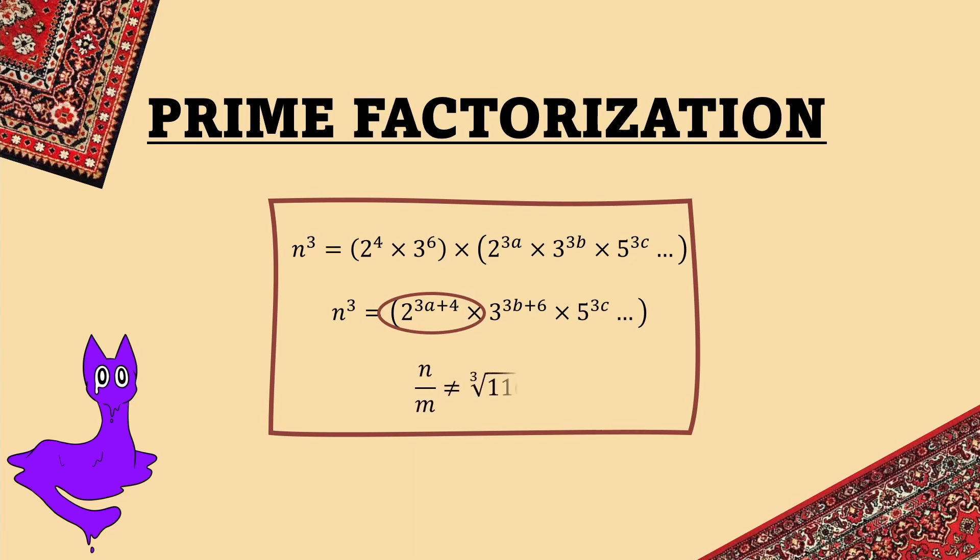And this brings with it all of the same non-rational root implications as before. On the other hand, if you pick a cubic number to multiply it by, in your result, all of the factors are going to be to multiples of 3, meaning there is a rational root, and it solves the carpet problem.